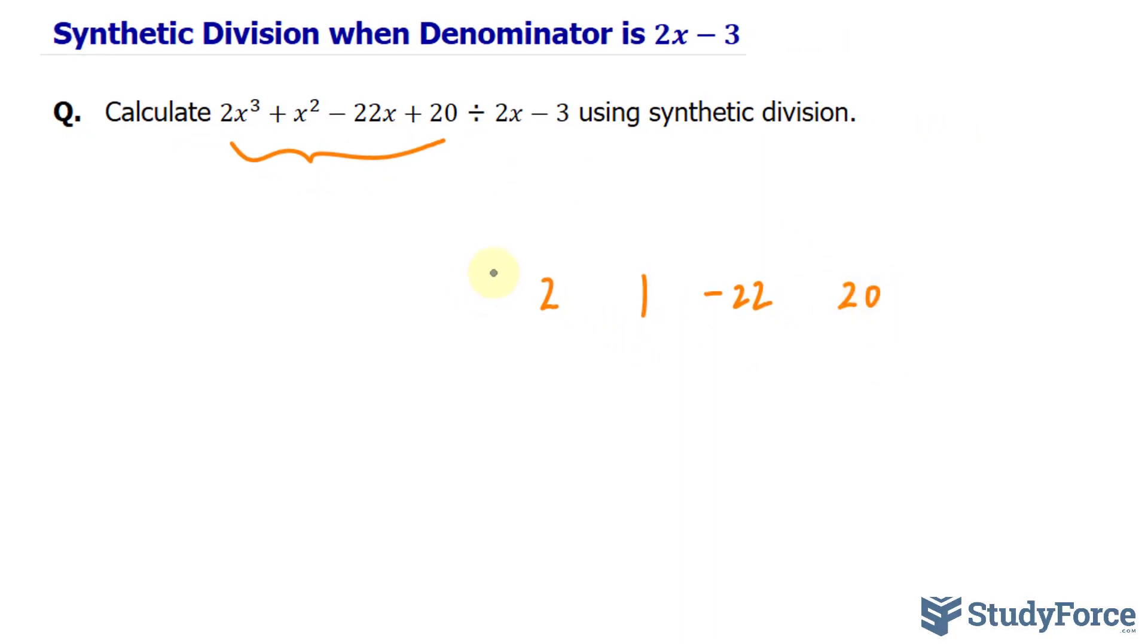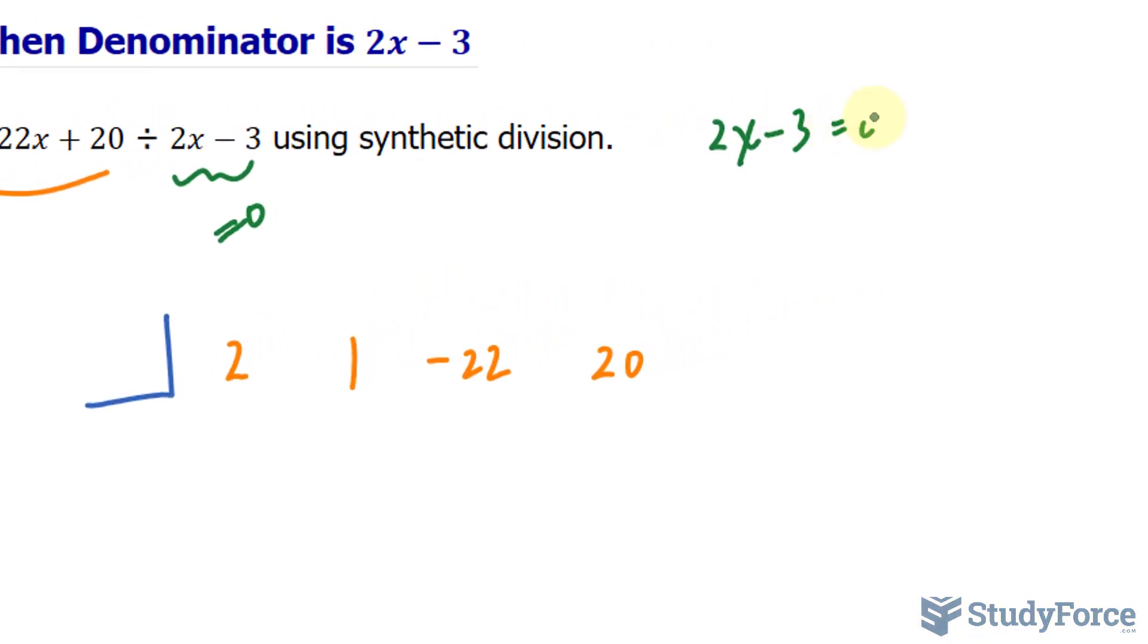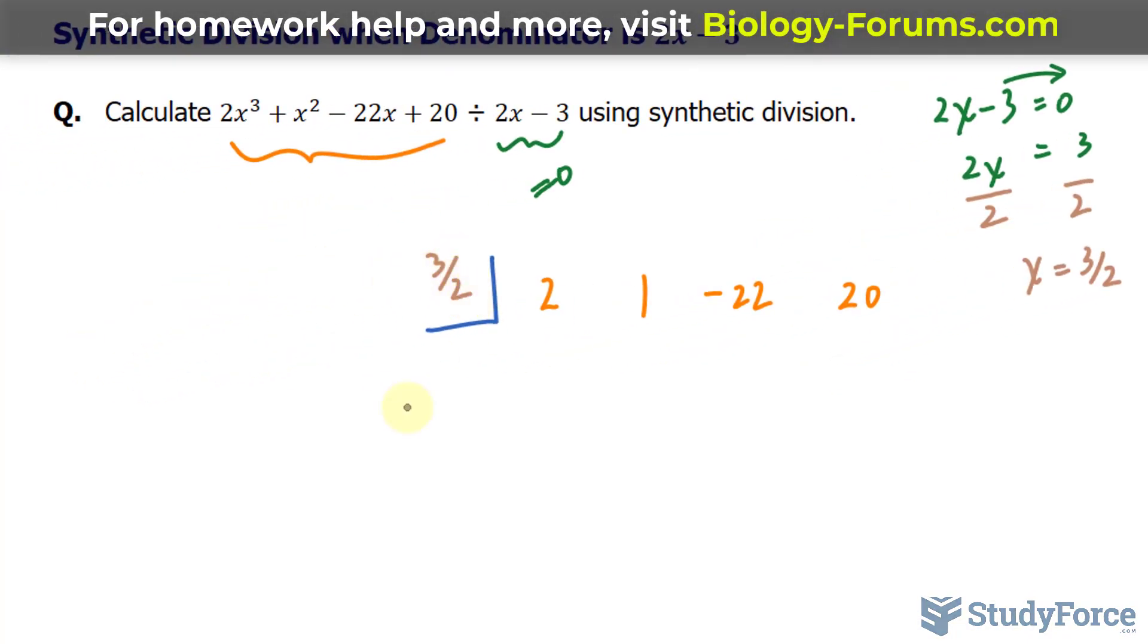Furthermore, we need to introduce this division box here, and the number that gets placed into there is found by setting that expression equal to 0. So if we have 2x minus 3 equal to 0, solving for x, we bring that 3 over, we get positive 3. Then dividing both sides by 2 gives us the value of x, which we're looking for, and that gets placed right there. So 3 over 2.